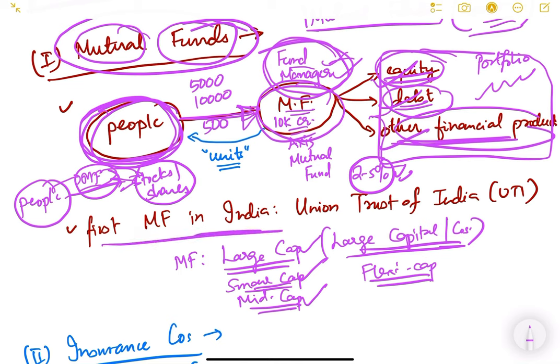The first mutual fund in India was UTI Mutual Fund — Union Trust of India Mutual Fund.